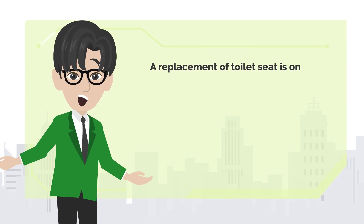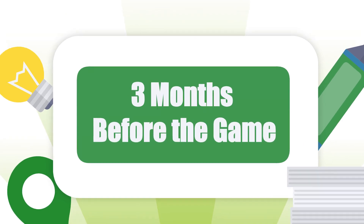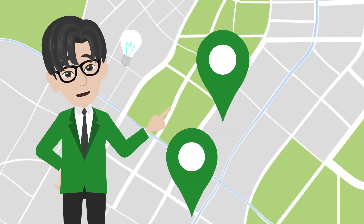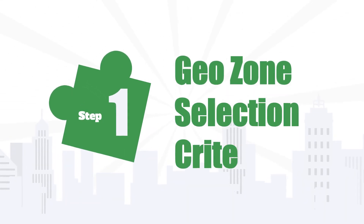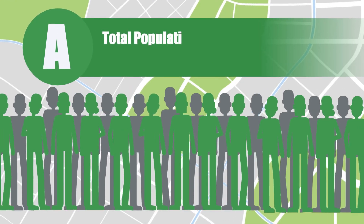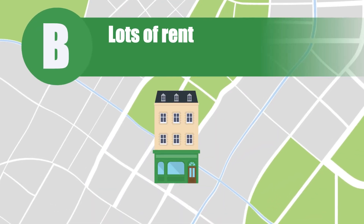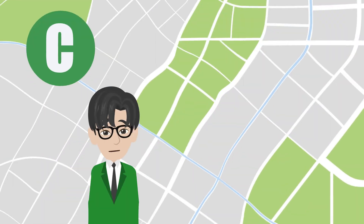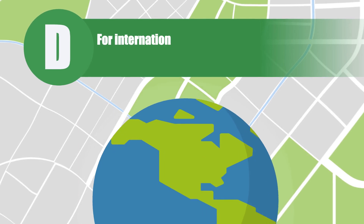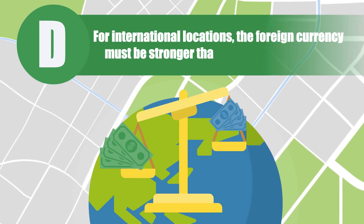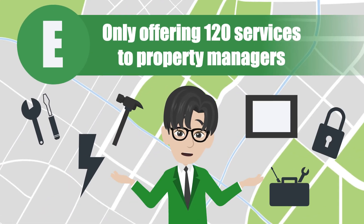A replacement of a toilet seat is one of the 120 services we provide to PMs. It is important to realize, no matter what the location, the play is the same. Step 1: GeoZone selection criteria. A: Total population living in GeoZone between 1 and 3 million people. B: Lots of rental properties that are close together. C: English is the predominant language. D: For international locations, the foreign currency must be stronger than the Australian dollar. E: Only offering 120 services to property managers.